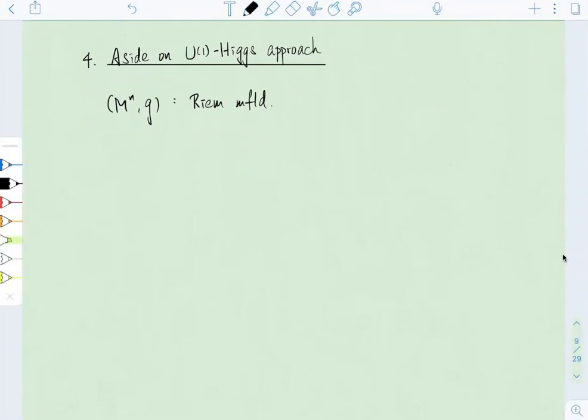So the setting is similar. You have a Riemannian manifold, but let's say it's closed. And then instead, again, the functional comes with a positive parameter epsilon.